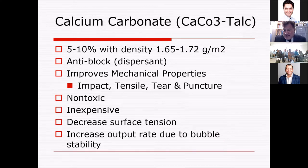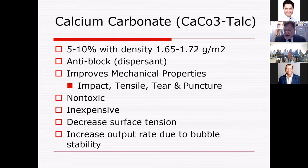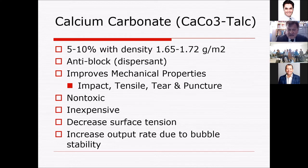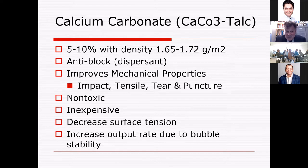This is the second dirty secret of membrane manufacturers — an adaptation from film manufacturing to membrane manufacturing. This typically breaks off at 0.75 millimeters or 30 mil material. The film folks have been using calcium carbonate in the mix at 5 to 10% with a density of 1.65 to 1.72, which will really pop up the material. It's an anti-block or dispersant that improves mechanical properties — impact, tensile, tear, and puncture. It's non-toxic, inexpensive, decreases surface tension, and can help stabilize the bubble in a blown film extruder. A lot of wins, but all downsides as far as durability are concerned.